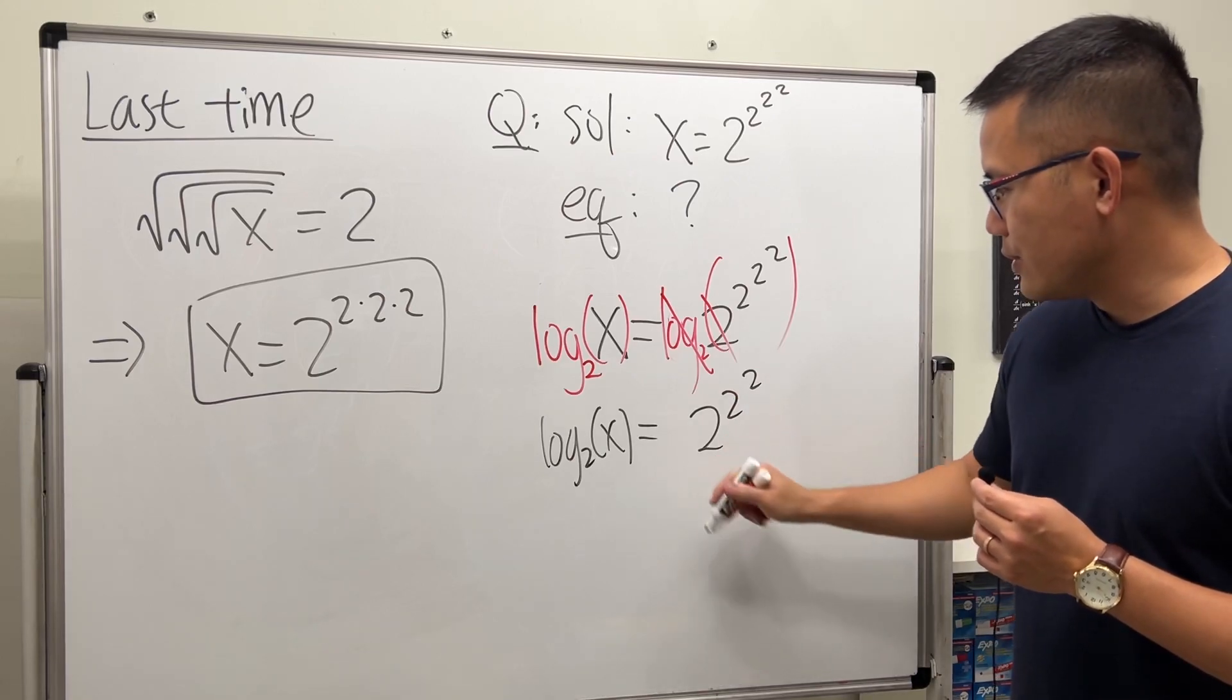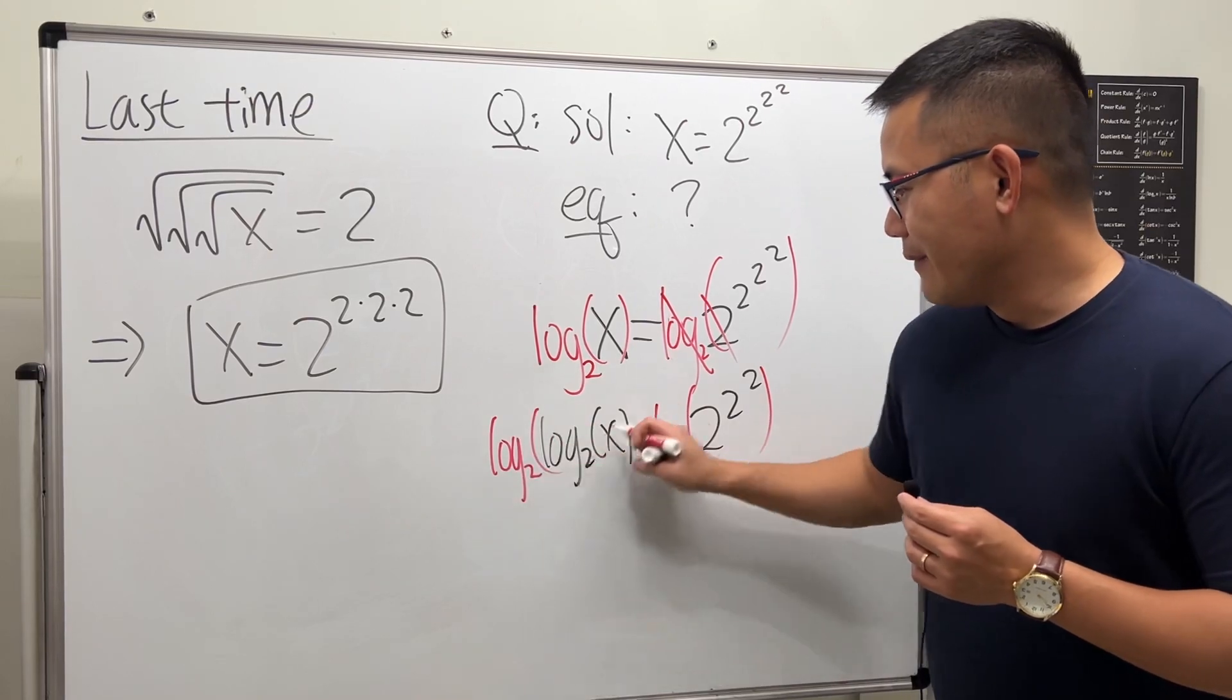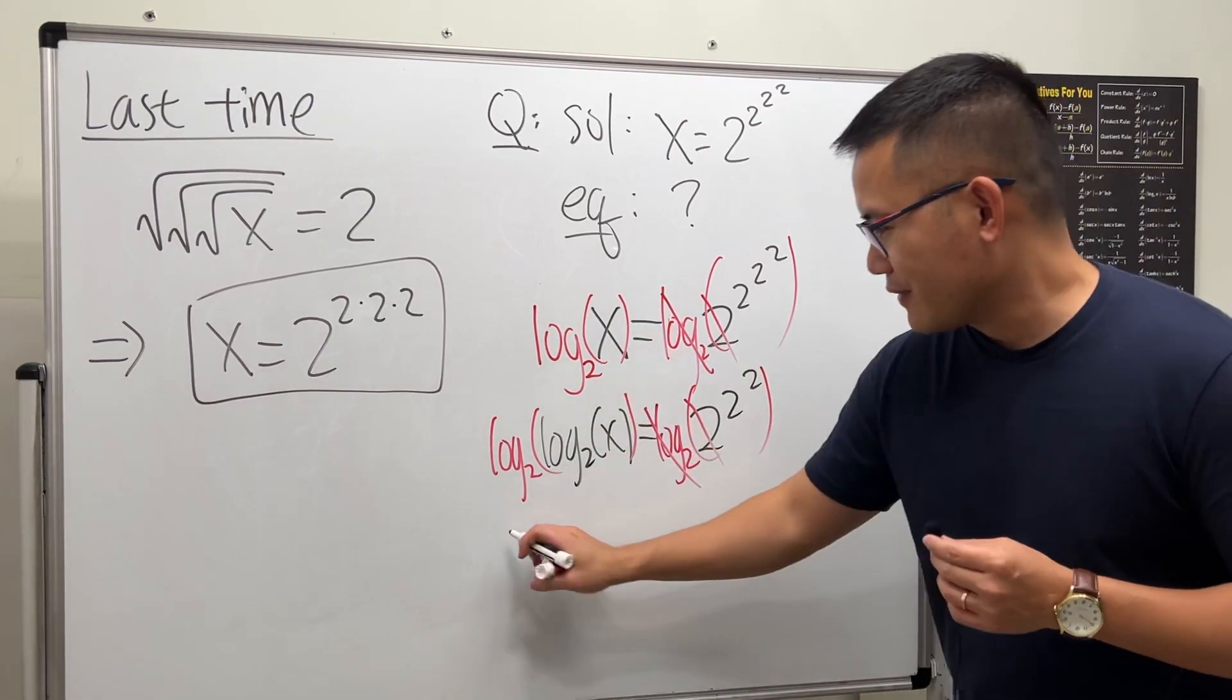And to get rid of this 2, of course, let's just put on log base 2, and then again log base 2. So let's do, yeah, cancel. And this is a lot of fun, actually.